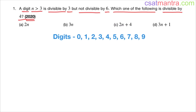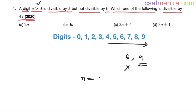This question is based on this concept — I'll show you why you need to know the difference between digit and number. n is greater than 3, so candidates are 4, 5, 6, 7, 8, 9. Divisible by 3: that gives us 6 and 9. But not divisible by 6: 6 is divisible by 6, so we are left with 9 only. Therefore n equals 9.